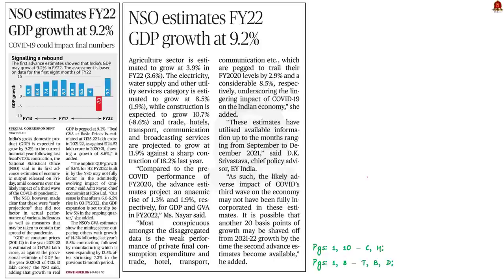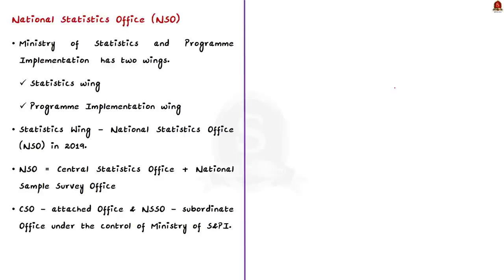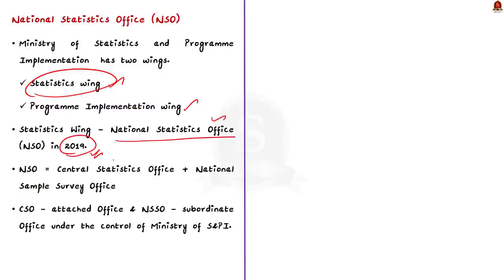This last news article talks about the GDP estimate for the year 2022, estimated by the National Statistical Office. This time, the NSO estimated GDP growth of 9.2%. In this context, let us learn about the NSO — why and how it was formed. The Ministry of Statistics and Programme Implementation has two wings: one relating to statistics and the other to programme implementation. The statistics wing was redesignated as the National Statistical Office in the year 2019.